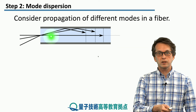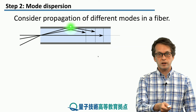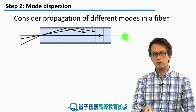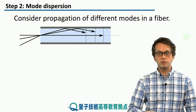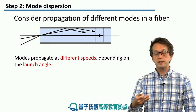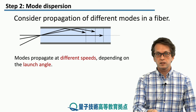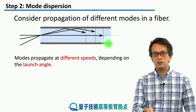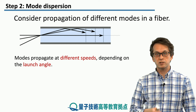A multimode fiber can contain many modes, all traveling with different paths. For example, you can have the axial path, which travels directly down the fiber, or you can have other modes which are being totally internally reflected within the fiber. The different modes propagate at different speeds because they have to traverse different lengths.